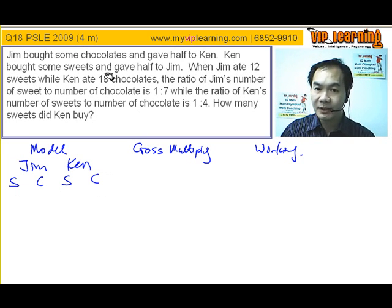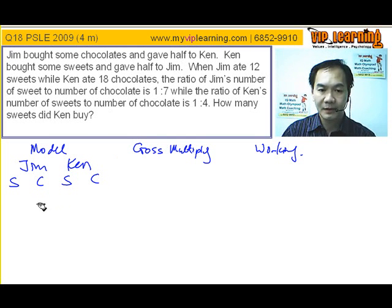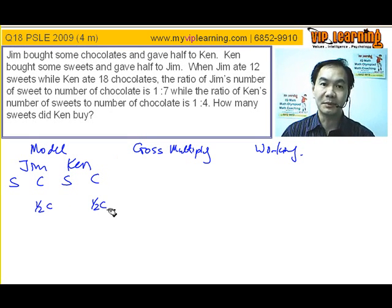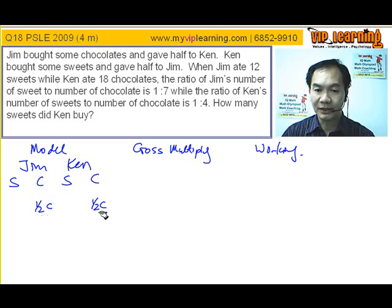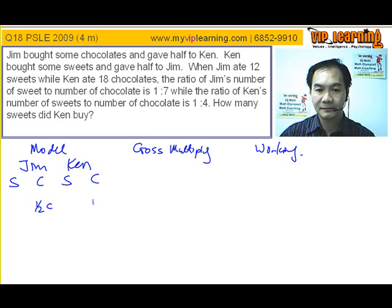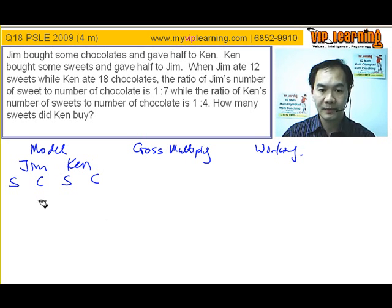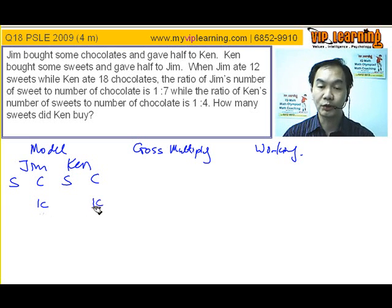What does the clue say? Ken bought some sweets. Jim bought some chocolates and gave half to Ken. In most situations, students would put half a portion here and give the other half portion to a friend. But this is not advisable because the general rule of mathematics is to simplify the matter. So we recommend doing it the simple way: assume Jim bought two portions — one portion for himself, the other portion for his friend. Similarly, Ken has one portion for himself and one portion for his friend. So it's an equal amount.